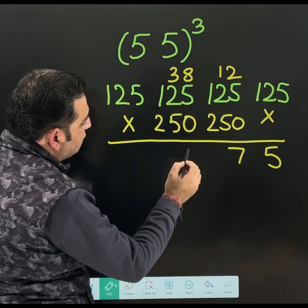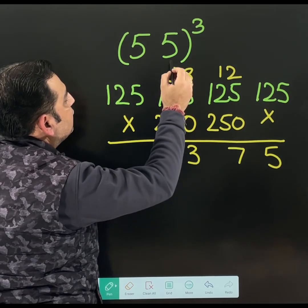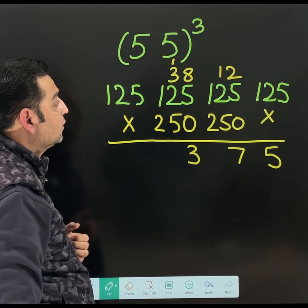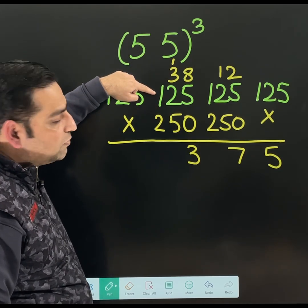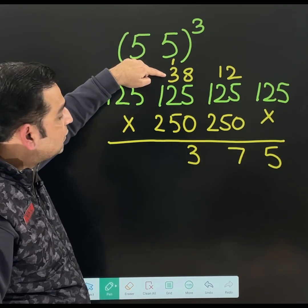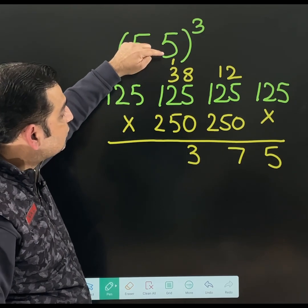Now, let me add all of them. 25 plus 12, 37. 37 plus 3, 40. 40 plus 1, 41. But don't write 41 here. 41 is carried to the next value.